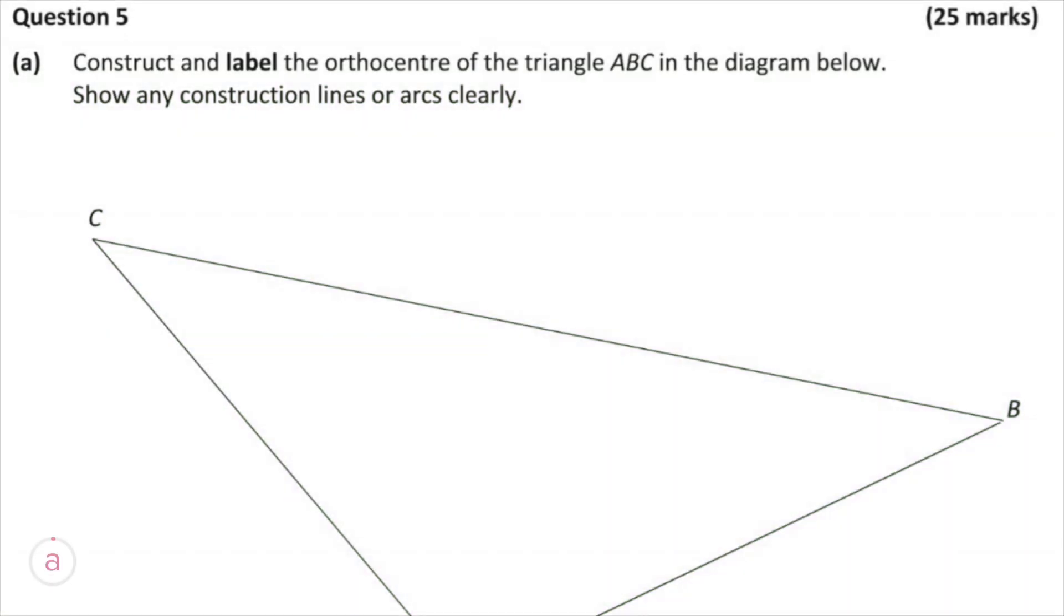Okay, so here's our question. We're asked to construct and label the orthocenter of the triangle ABC and to show any construction lines clearly. So this is pretty straightforward.